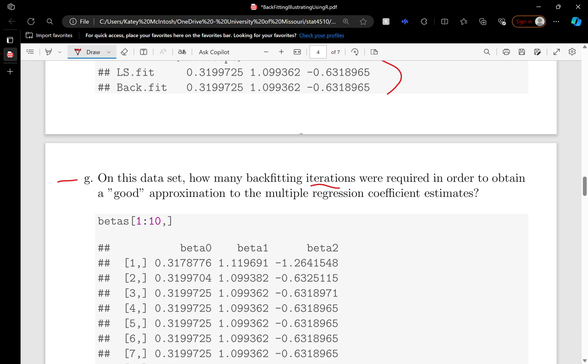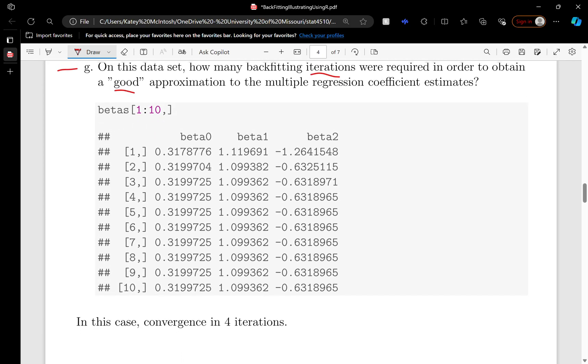On this dataset, how many iterations are needed to obtain a good approximation? If we look at this—this is the first iteration, the second, the third—and then after this, they're all constant. We obtained convergence in four iterations of using the backfitting algorithm.